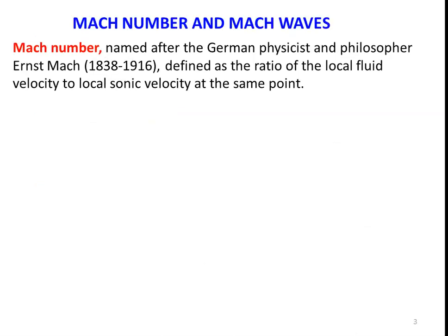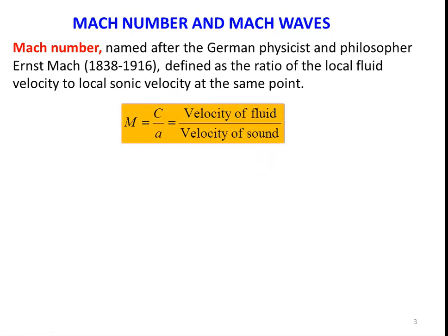Mach number is named after the German physicist and philosopher Ernest Mach. The Mach number is defined as the ratio of local fluid velocity to the local sonic velocity, or velocity of sound, at the same point. So M = C/A, where C is the velocity of the fluid and A is the velocity of sound. This definition is very important — the entire subject is based on the Mach number. Remember: M = C/A.